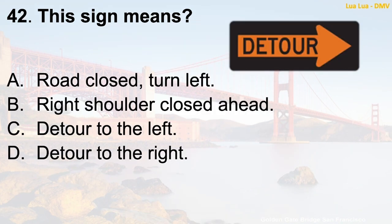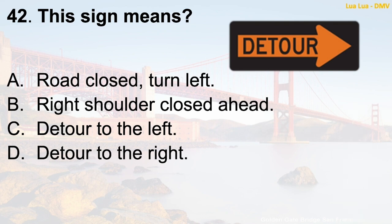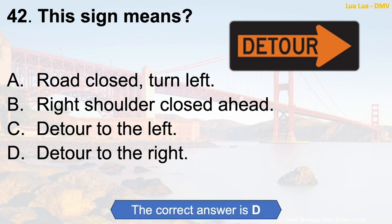Question 42: This sign means — A. Road closed, turn left. B. Right shoulder closed ahead. C. Detour to the left. D. Detour to the right. The correct answer is D: Detour to the right.